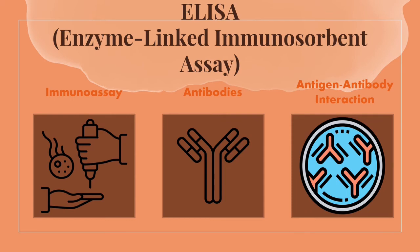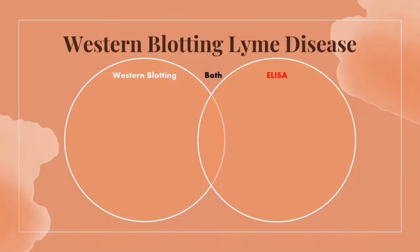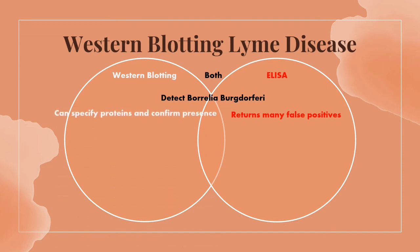While this method is efficient, ELISA is known to produce false positives, indicating there is a protein present when there is not. This is not ideal, as it would diagnose someone with Lyme disease when in reality they might not have it. Both ELISA and the Western blot can detect Borrelia burgdorferi, so why don't we just use one over the other? ELISA returns many false positives, after which the Western blot is used to specify the protein and confirm its presence.